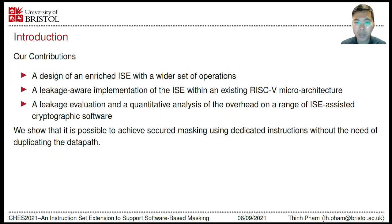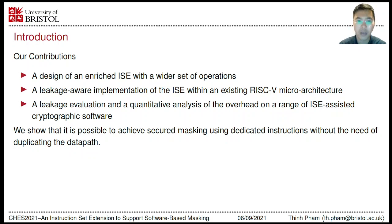Regarding security and performance of masking, our paper presents some main contributions. First, we introduced a design of an enriched ISE with a wider set of operations. Second, we presented an area-efficient and leakage-aware implementation of the ISE within an existing RISC-V microarchitecture. Finally, a leakage evaluation and quantitative analysis of overheads on a wide range of ISE-assisted cryptographic software was conducted. As a result, we showed that it is possible to achieve secure masking using dedicated instructions without duplicating the data path, which is often introduced in existing hardware and ISE-based approaches.